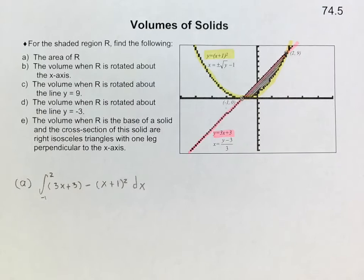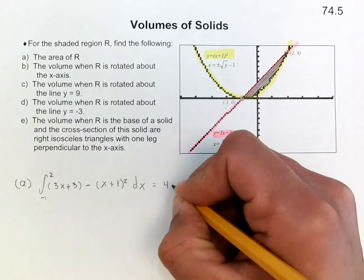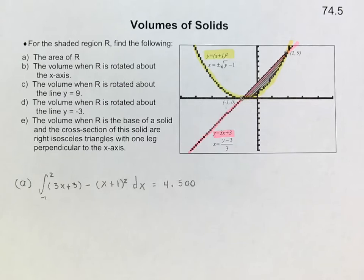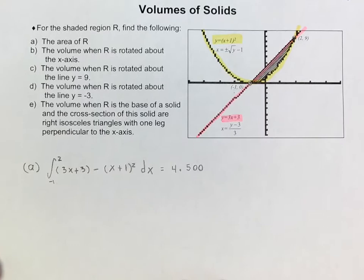At this point I would like you to use the calculator. If we integrate that on our calculator it's 4.5, and we're going to keep it to three decimal places, so that's why I wrote 4.500. Alright, let's go to B now.